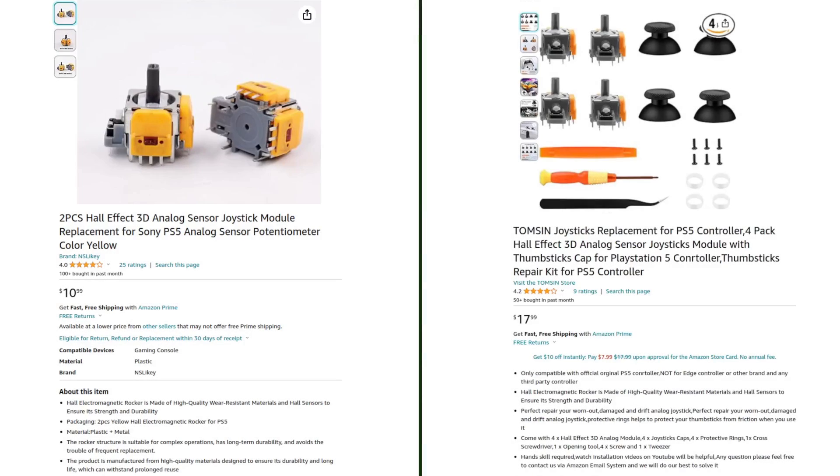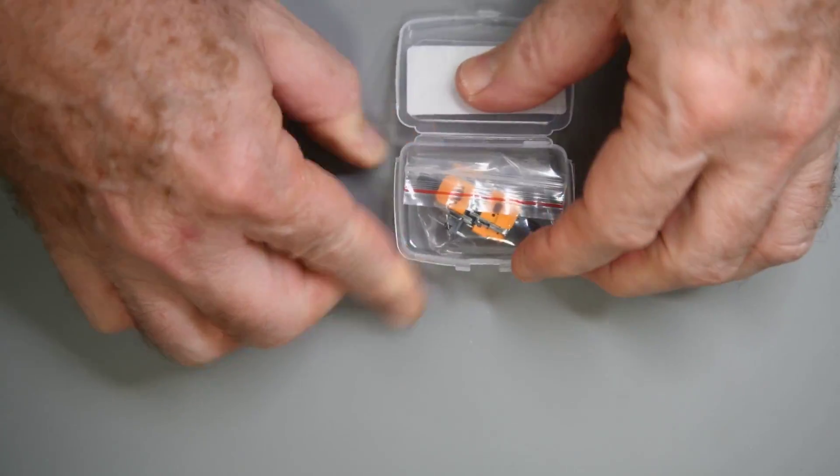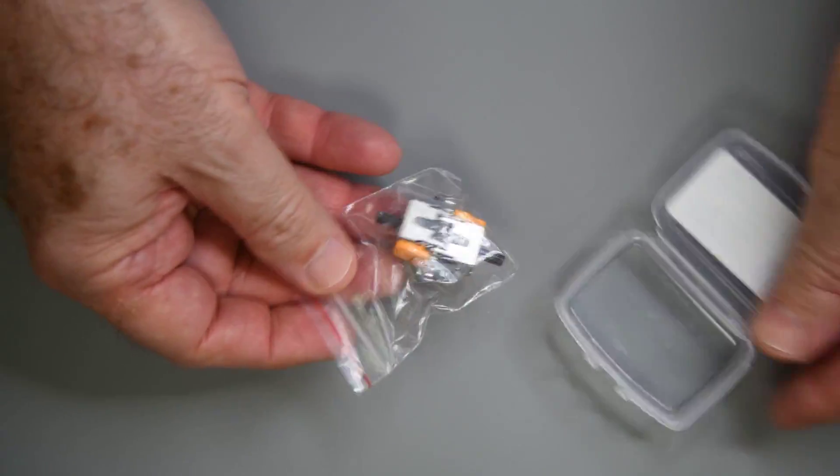In this video I'm going to take a look at two Hall Effect Joystick Kits for the DualSense controllers. Both are available on Amazon as I make this video.